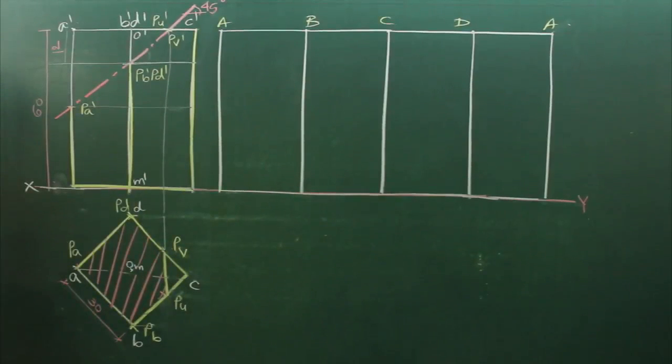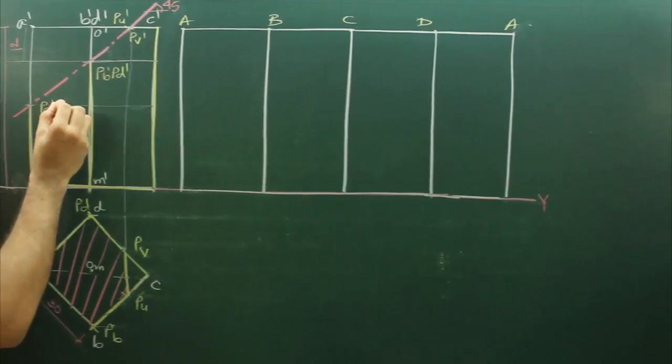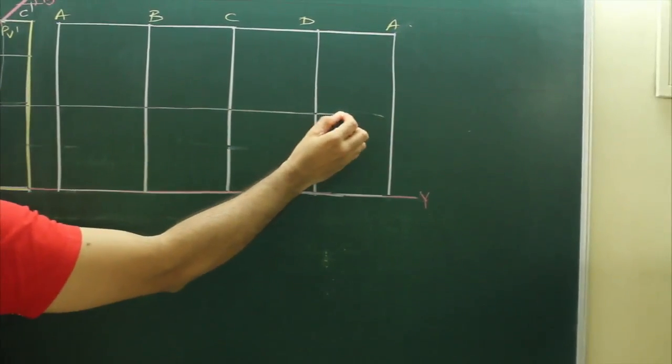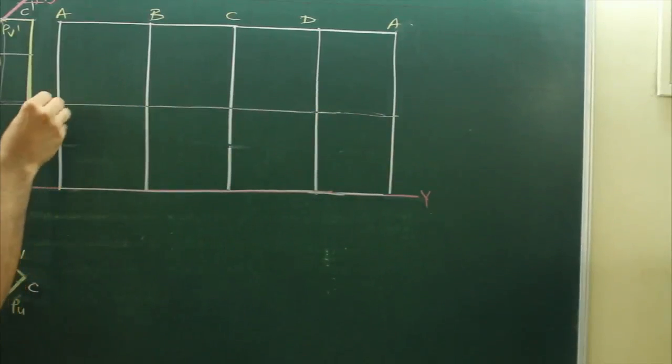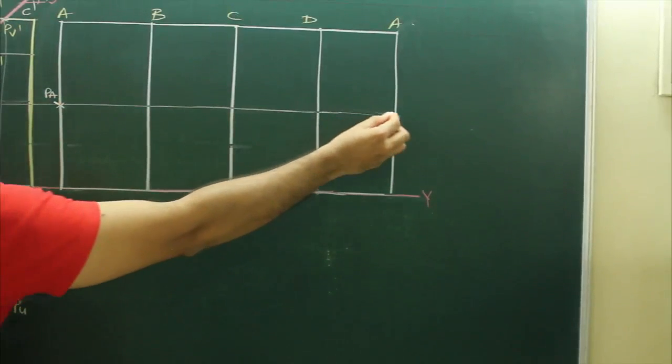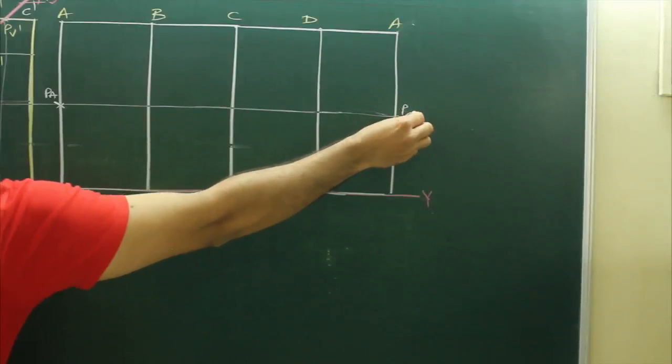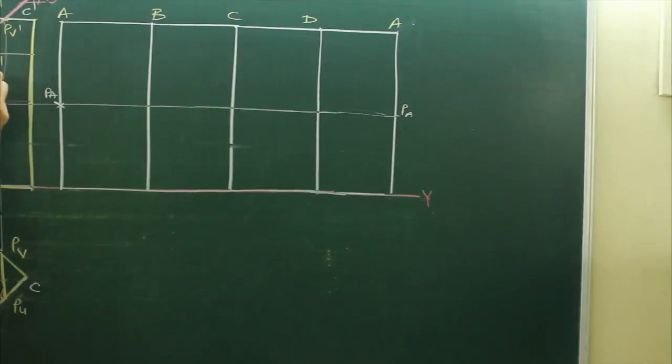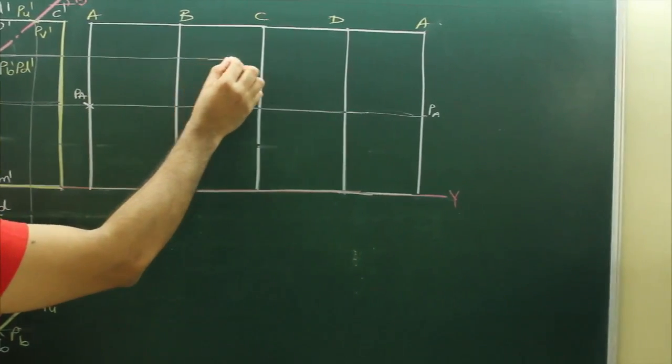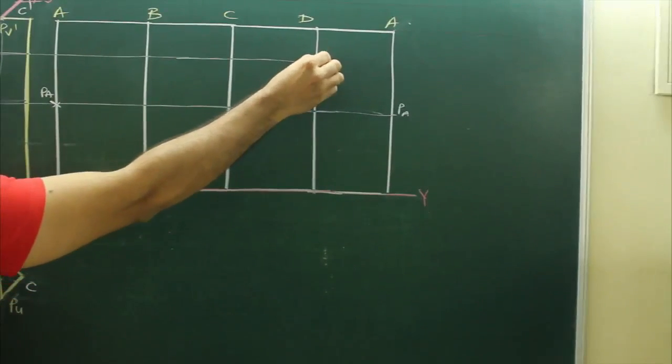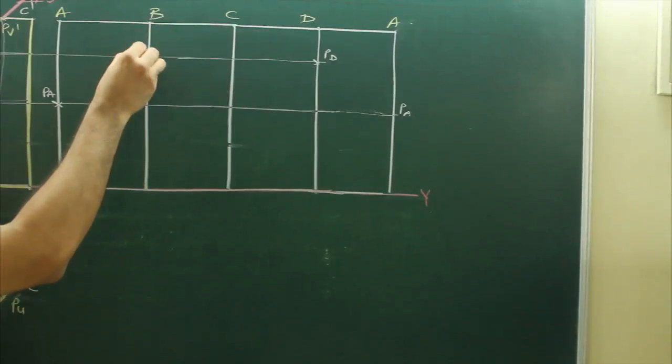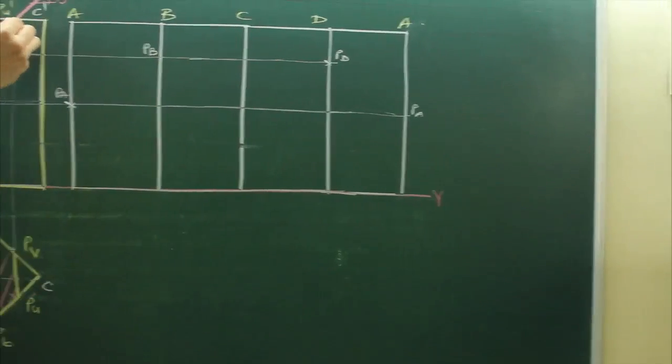After that, we will take points from PA dash. So wherever it will cut on A, that is point PA and PA. Then we will extend PB dash and PD dash. Wherever it will intersect on B, that is PD and on D it will be PB.